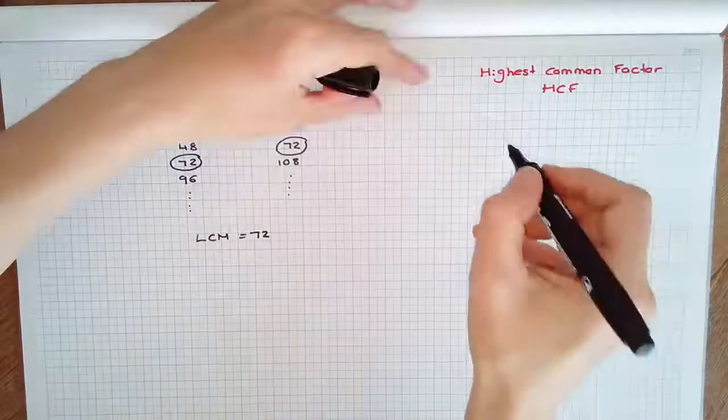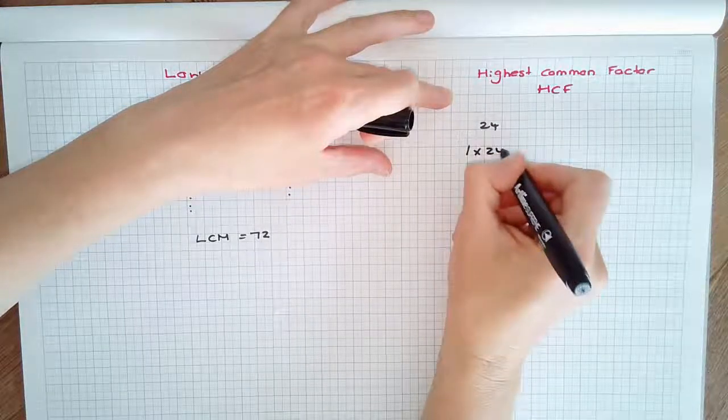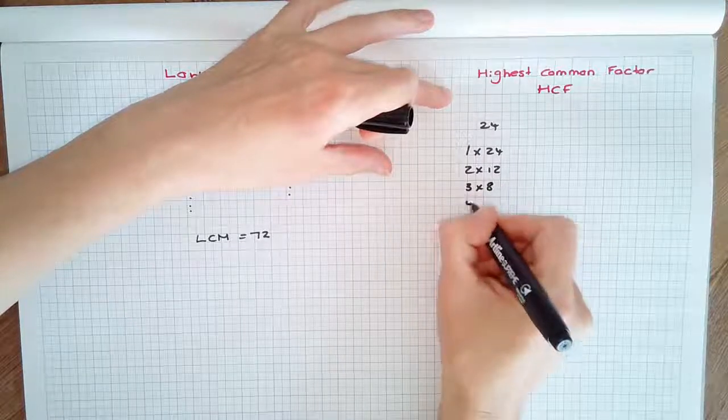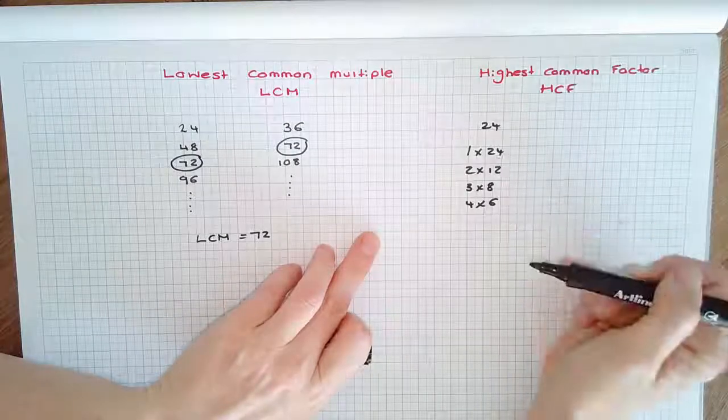Let's have a look at factors. The factors of 24, we can get 1 times 24, 2 times 12, 3 times 8, 4 times 6. So the factors are 1, 2, 3, 4, 6, 8, 12, and 24.